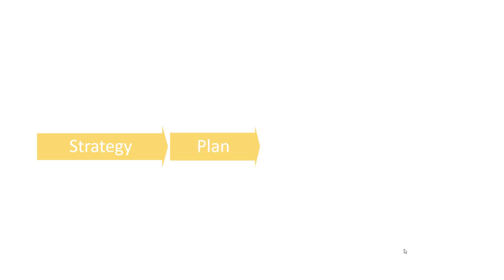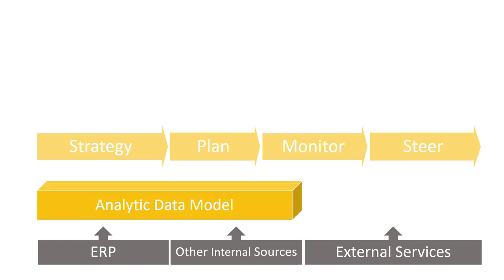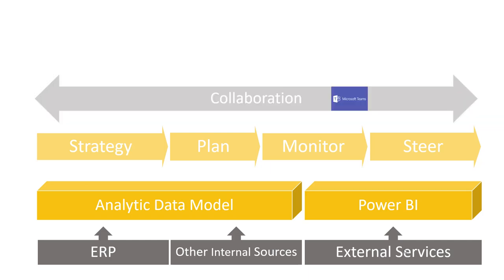Performance management in our definition is a feedback cycle that covers setting the strategy, planning, putting together an operational plan, monitoring that plan, and then steering in case there are variances. The process typically involves a wide variety of data sources — ERP systems, other internal sources, and external services. These are typically accessed using an analytic data model, but there is also the option to access them directly in Power BI.